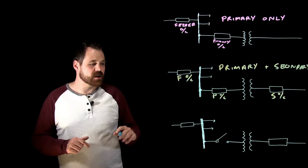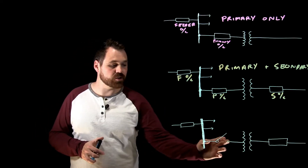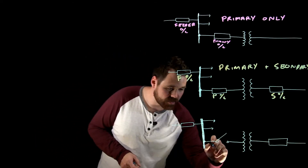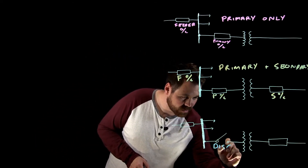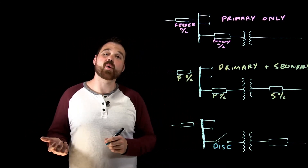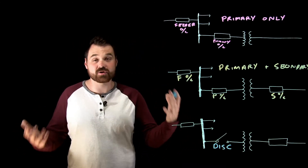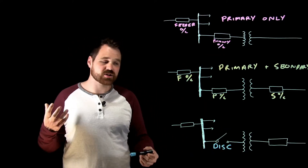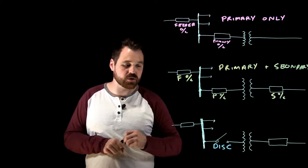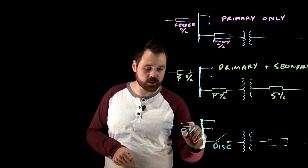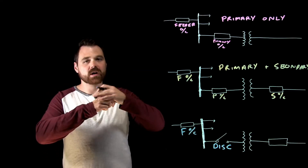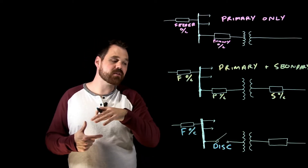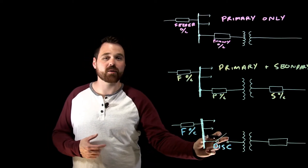The third one is a little bit more of a special application. On the primary, there isn't an overcurrent device — I only see that disconnect. Now a disconnect is required on all transformers by code, so all of these have the disconnect as well. But on this one, there are special certain circumstances where if my feeder OC is sized correctly and within a certain percentage of the rated primary current — if that feeder is small enough — then I don't require overcurrent protection on the primary.